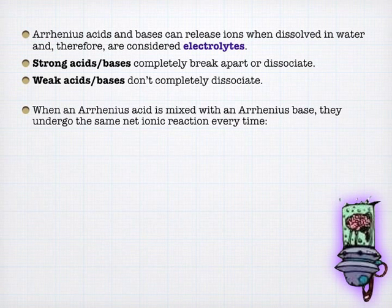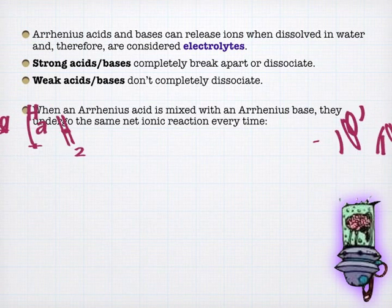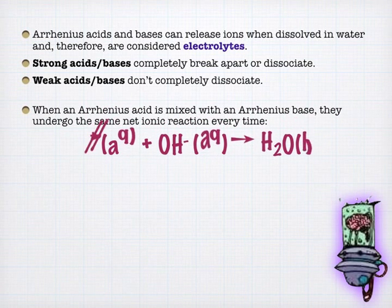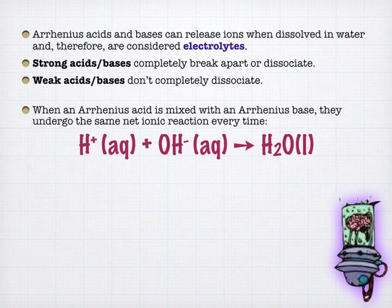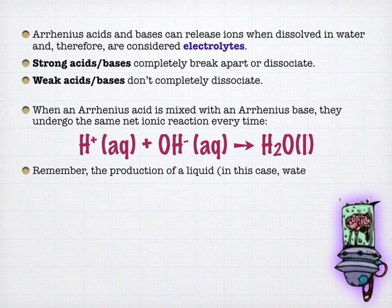Now we'll show through an example here in a second that when you mix an Arrhenius acid and Arrhenius base, you typically get the same net ionic equation every time. Now this, and I will say actually, this wouldn't be the case if it produces a precipitate too. But most of the time, the hydrogen ions are going to react with the hydroxide ions and form water. And so they'll neutralize and form a liquid, in this case water, and that would be a driving force.